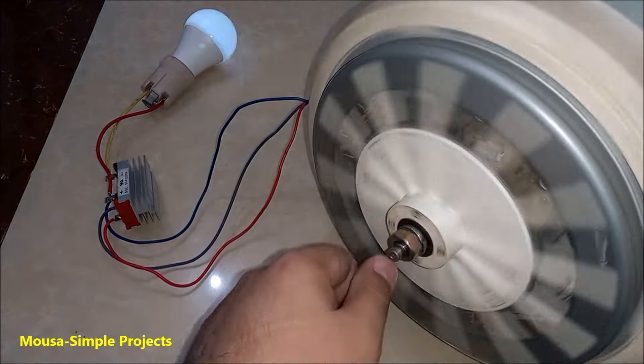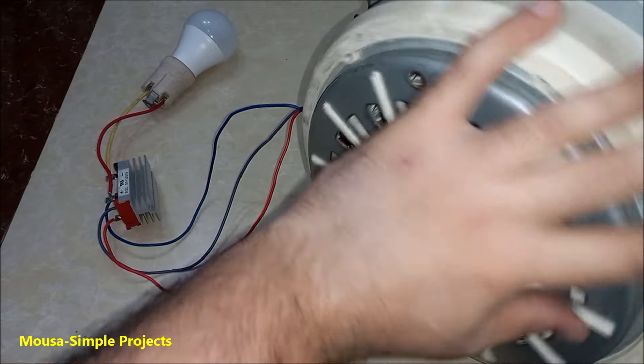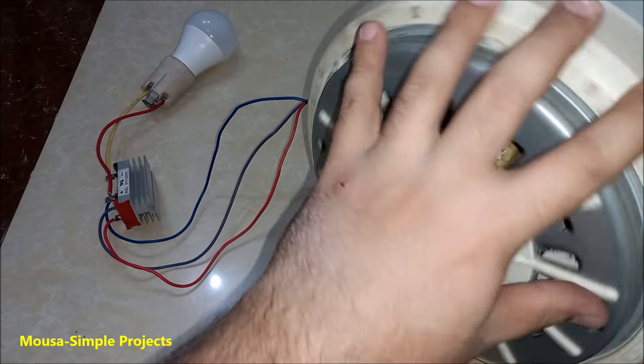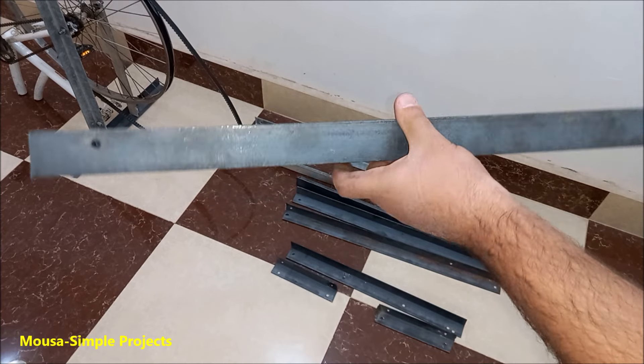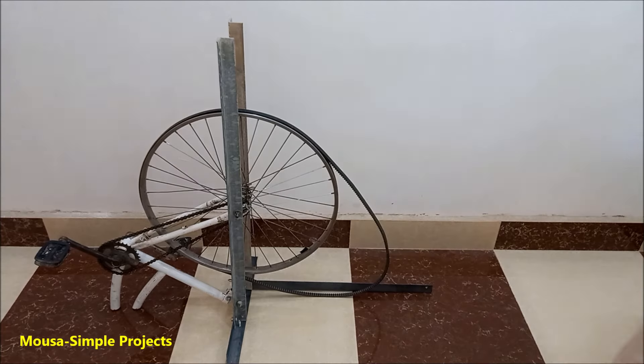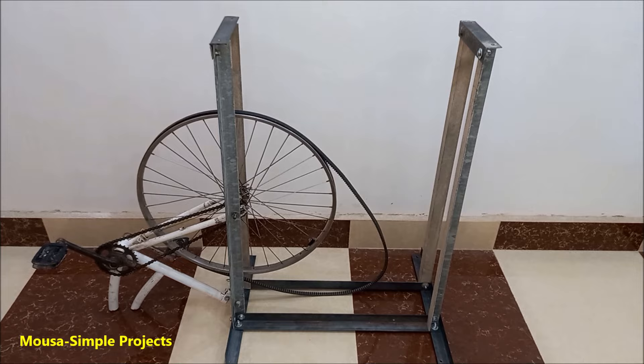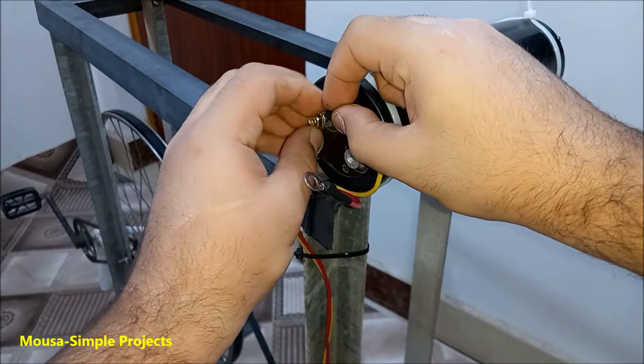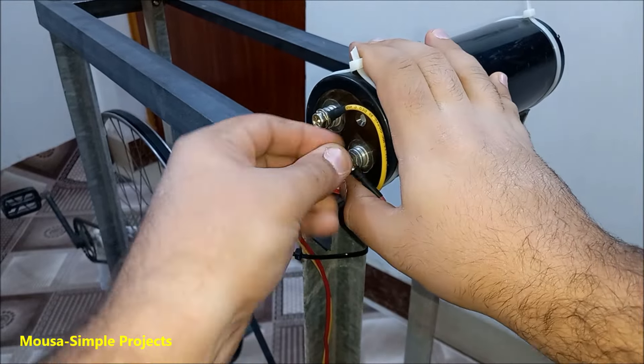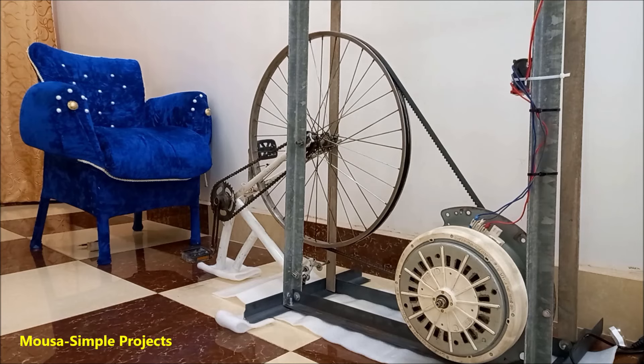I got some angle iron to make the frame of the pedal generator and joined them together by using screws and nuts. Then I hooked up the output voltage of the generator to a three-phase bridge rectifier and a big capacitor. So now we're done.